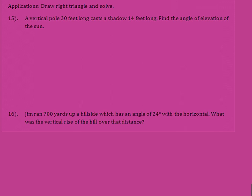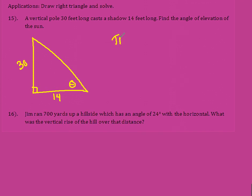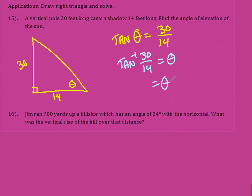Now the application problems — just try to draw the picture the best you can. A vertical pole casts a shadow: the pole is 30 feet long and the shadow is 14 feet long. We want the angle of elevation, which is down at the bottom. Based on that angle I have opposite and adjacent, so that's tangent. Tangent of theta equals 30 over 14. To find the angle I take the inverse tangent — second tangent of 30 over 14 — giving 64.98 degrees.